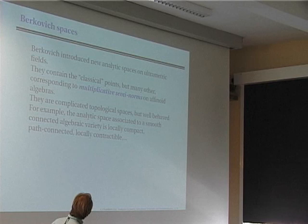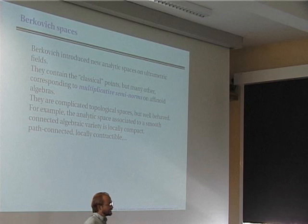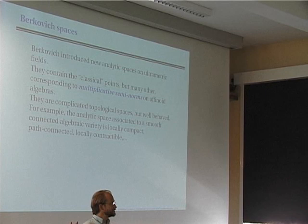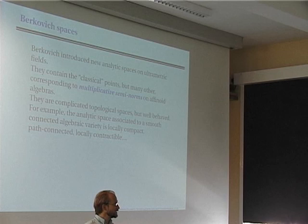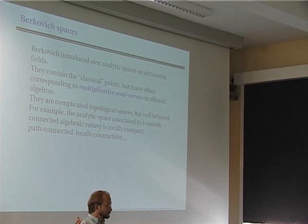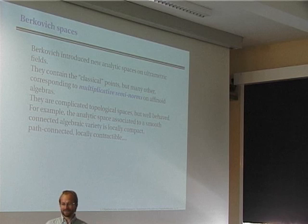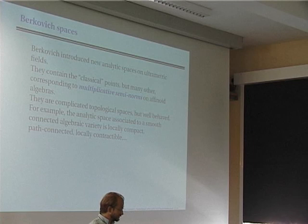These new points correspond to multiplicative semi-norms on algebras. In algebraic geometry, points correspond to morphisms from finite type k-algebras to fields. In the Berkovich sense, they correspond to morphisms from affinoid algebras — as Henri described yesterday — to valued fields (not only fields, because you want to do analysis). If you have a map from an algebra to a valued field, you get a semi-norm on the algebra given by taking an element, pushing it to the field, and taking its absolute value — it's a semi-norm because the map could have a kernel.